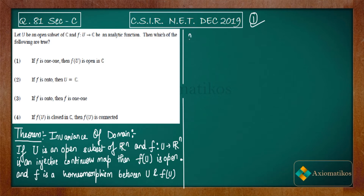Now let us try option two. It says: if f is onto, then U must equal ℂ. To analyze this, you need to know Picard's Great Theorem — it is very essential for this problem; otherwise you have no idea how to solve it.